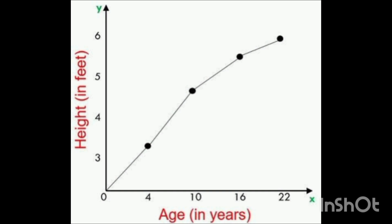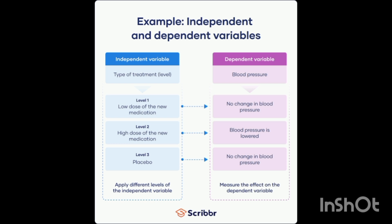If there is more age, your height will grow, but at some point your height will stop growing. Looking at treatment levels and blood pressure as the dependent variable: a low dose of new medication results in no change in blood pressure; a high dose results in lower blood pressure; and a placebo results in no change in blood pressure.